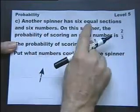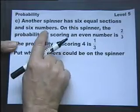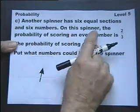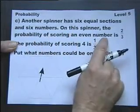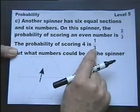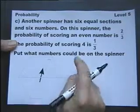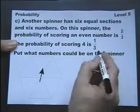Another spinner has six equal sections and six numbers. On this spinner, the probability of scoring an even number is two-thirds. The probability of scoring a 4 is a third. Put numbers that could be on the spinner, so there's more than one possible answer to this. Let's look at this.